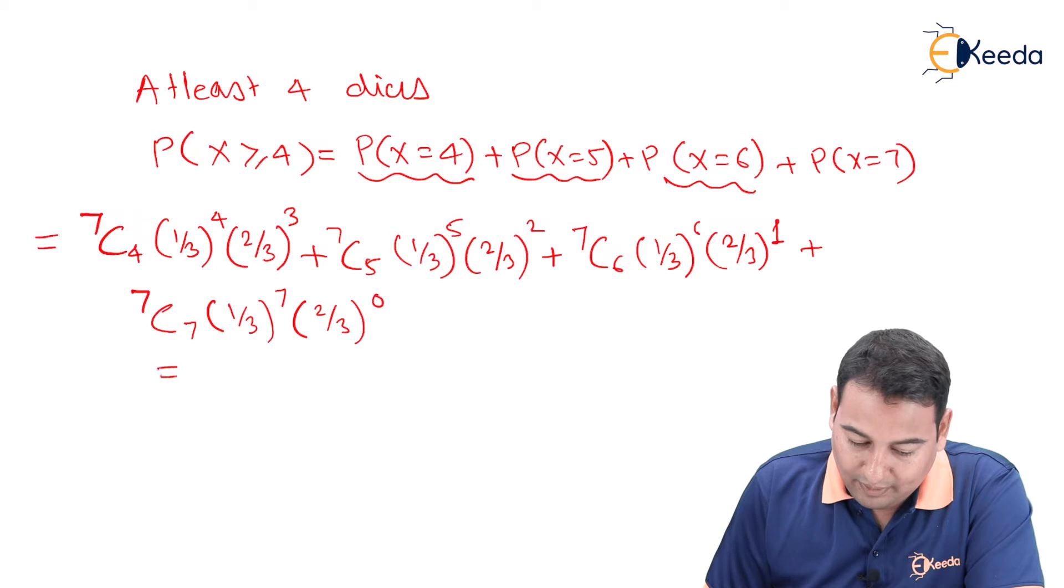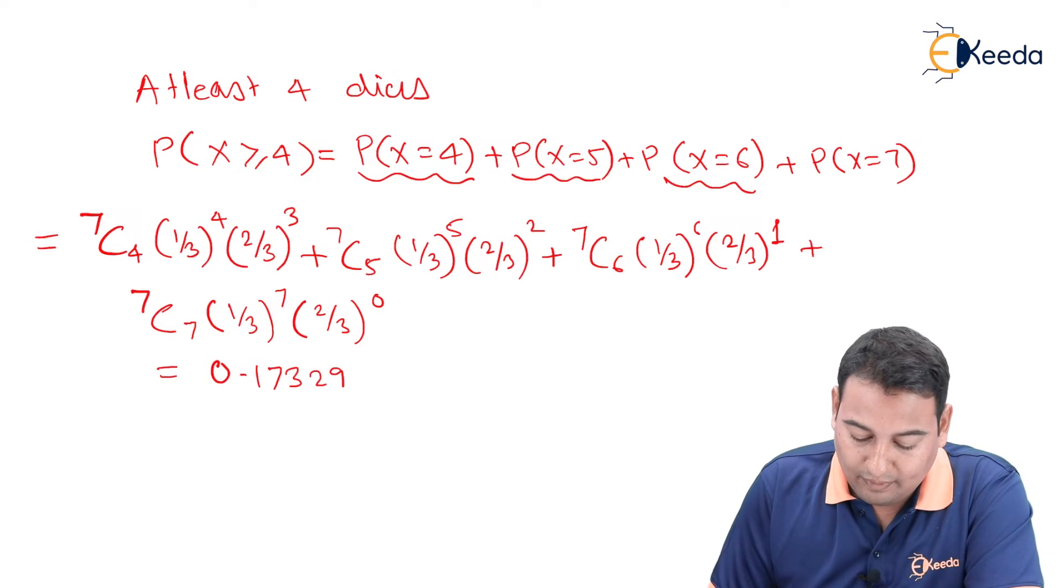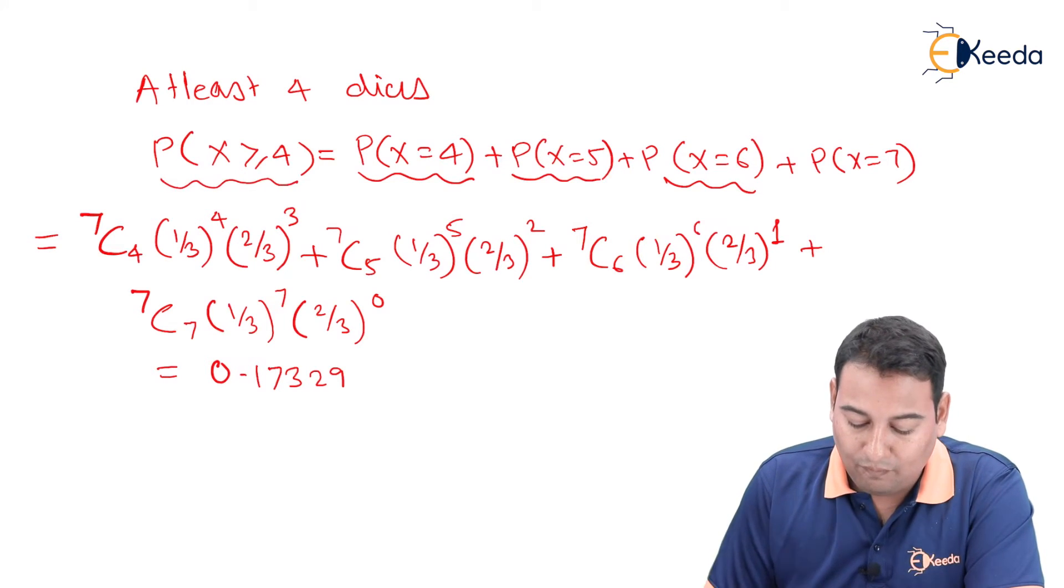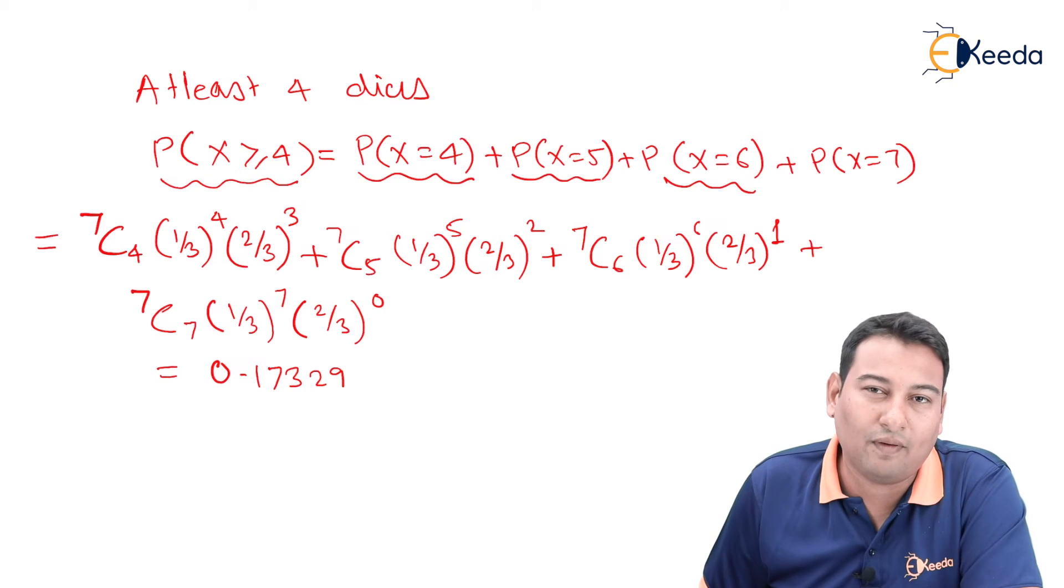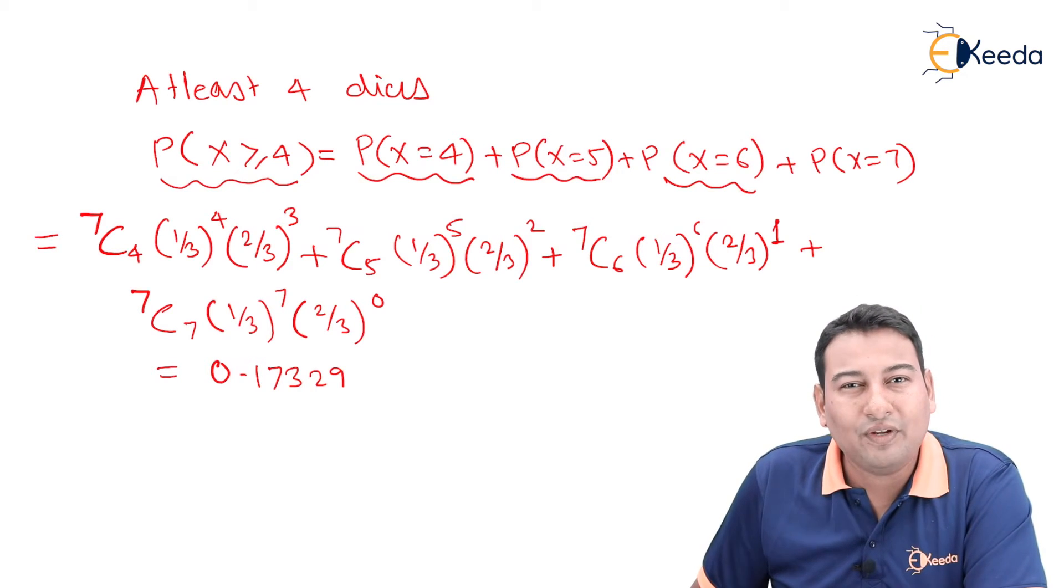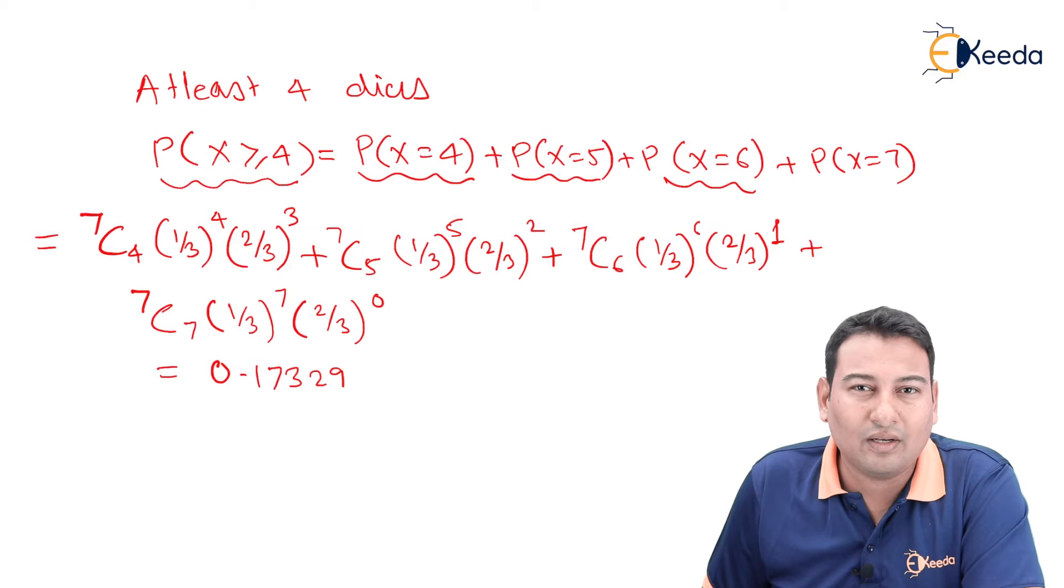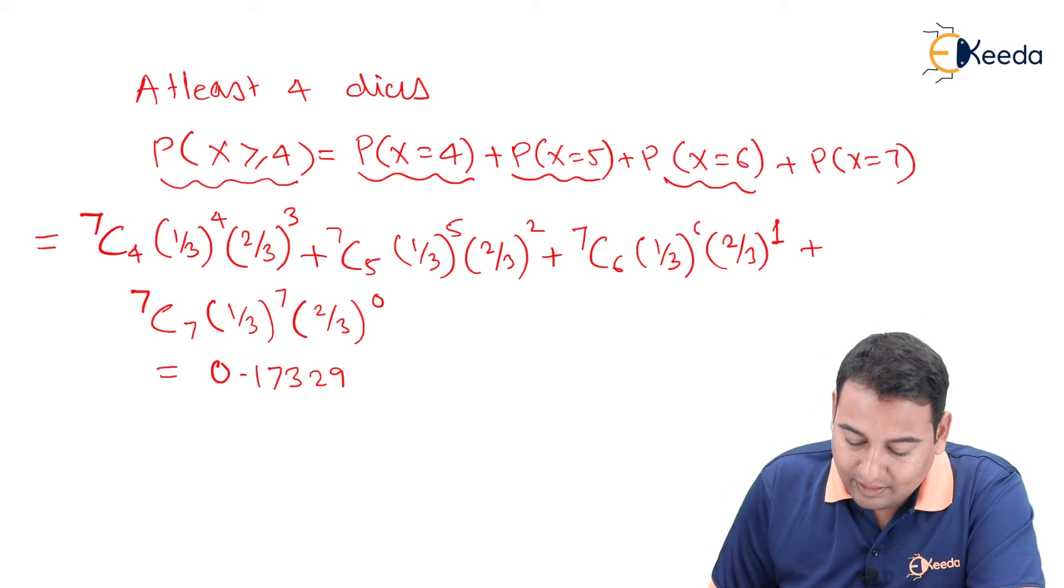If you simplify this, you will get the answer as 0.17329. This is the answer for at least four dice to show three or five. Friends, did we get the answer? No, because the answer that we got is the probability that